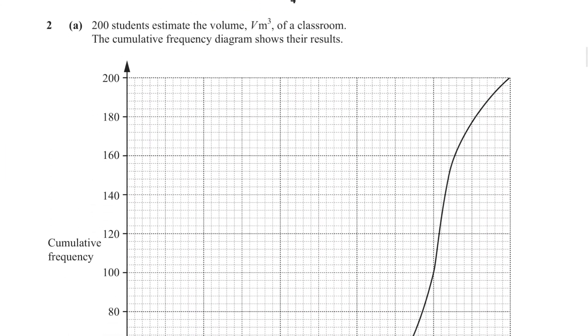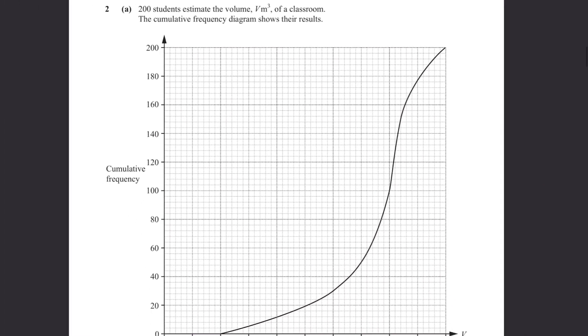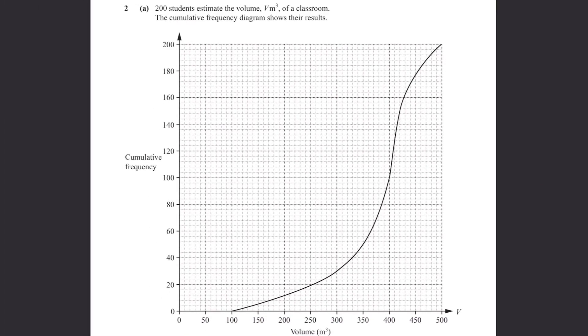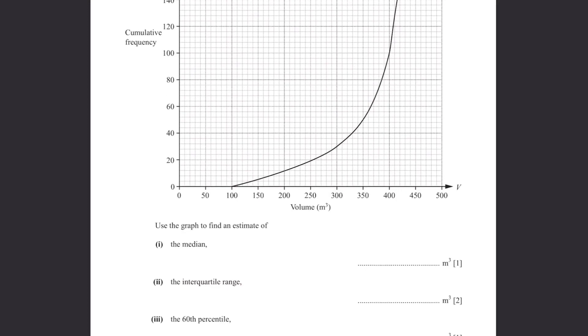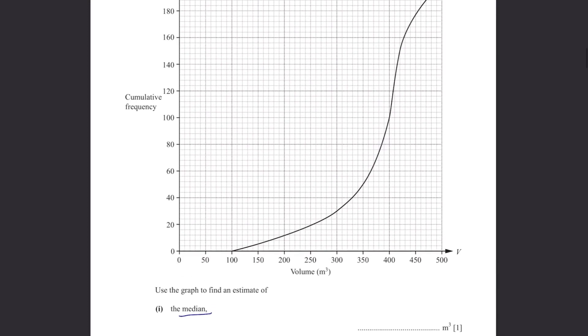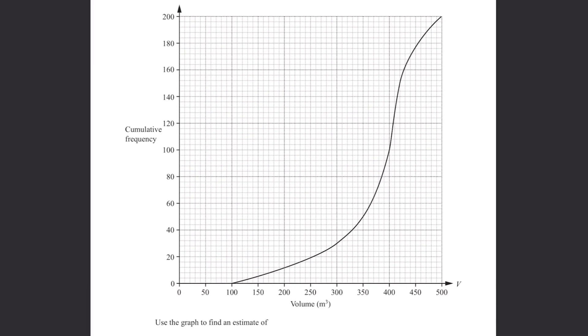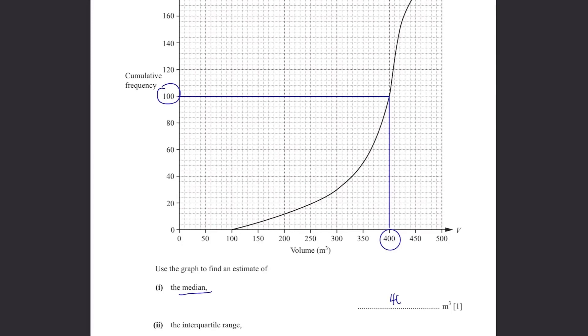Question 2. Part A. 200 students estimate the volume v meter cube of a classroom. The cumulative frequency diagram shows the results. Use the graph to find an estimate of the median. To find the median, find the middle point of cumulative frequency. In this case, it's 100 because the total is 200. Then draw a straight horizontal line and see where it meets the graph. It's at 400 of the volume so the answer is 400.